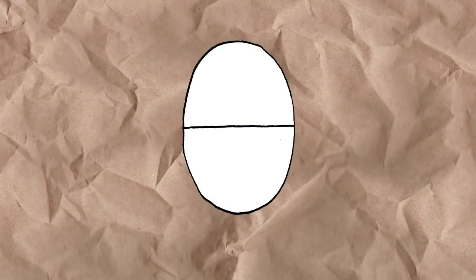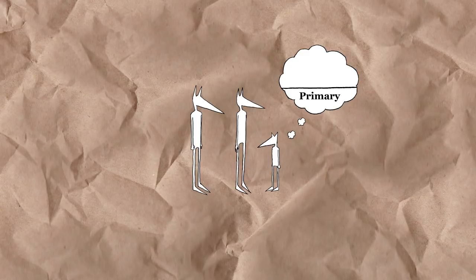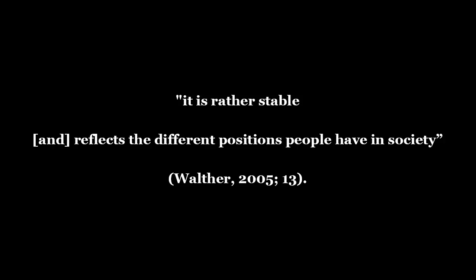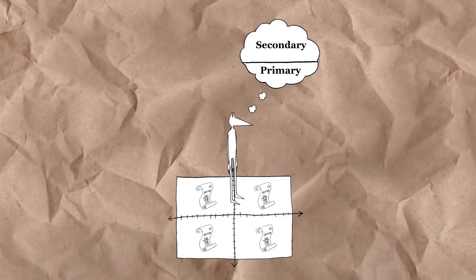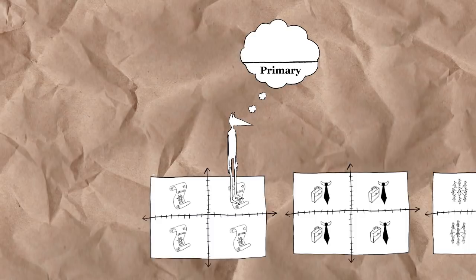Bourdieu distinguishes between the primary habitus and the secondary habitus. The primary habitus is the system of dispositions one embodies through socialisation in the family environment during childhood. It is rather stable and reflects the different positions people have in society. The secondary habitus is built on the primary habitus and especially results from one's education in school and university, but also from other life experiences. More precisely, the secondary habitus is developed through an agent's experience of fields during adulthood. As the habitus organises principles of action, it affects how an agent behaves in different fields, though these fields also affect the development of that agent's habitus.